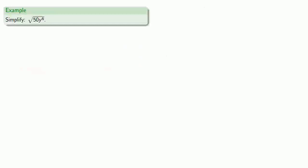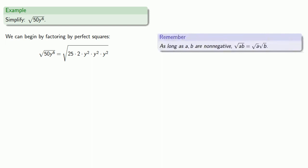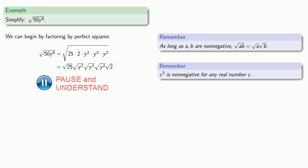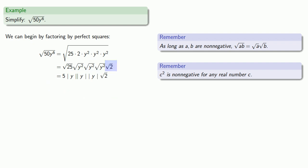For example, let's simplify √(50y⁶). We begin by factoring by perfect squares. As long as a and b are non-negative, √(ab) = √a · √b. It's also useful to remember that c² is non-negative for any real number c. So y², y², and y² are all non-negative, and we can break apart this square root into a product of individual factors. √25 = 5, √(y²) = |y|, √2 stays as √2, and we combine the three |y| factors into a single |y³|.